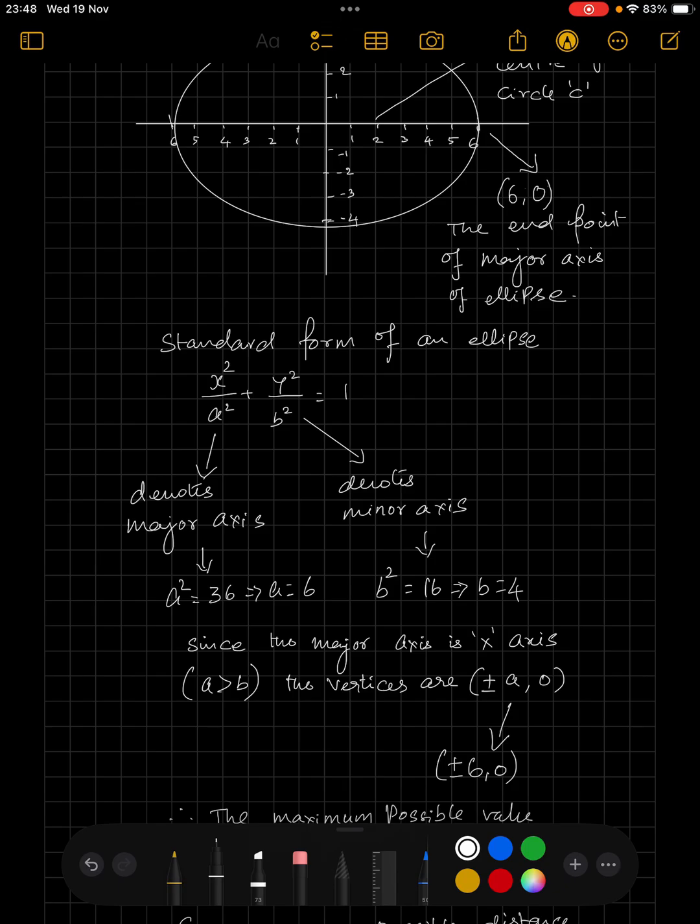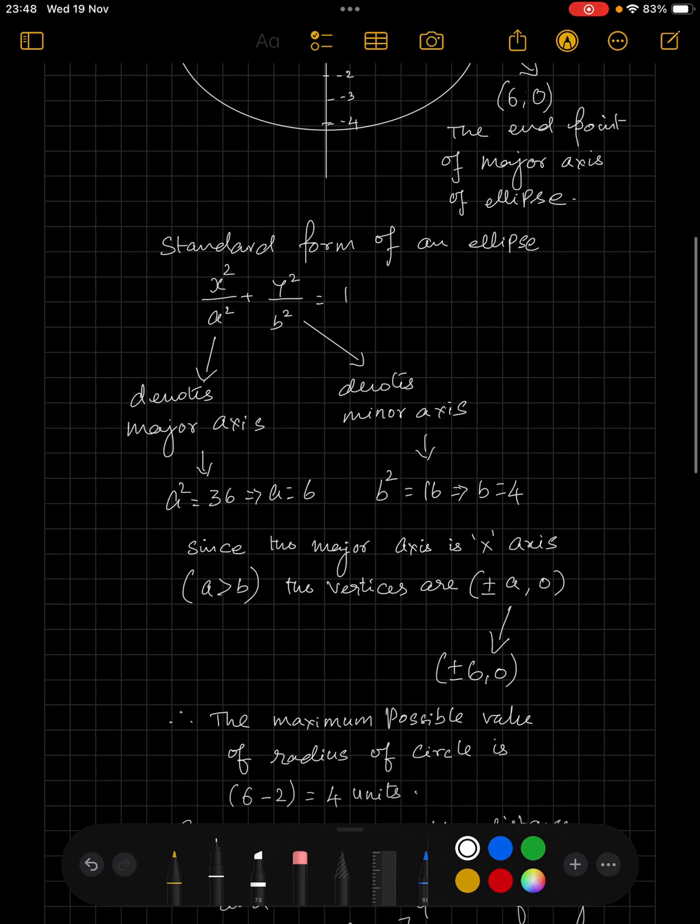Since the major axis is x axis, the vertices are at plus or minus a comma 0. We know a is 6, therefore the vertices are 6 comma 0 and let us draw the ellipse approximately.